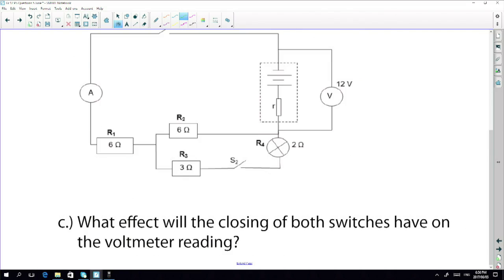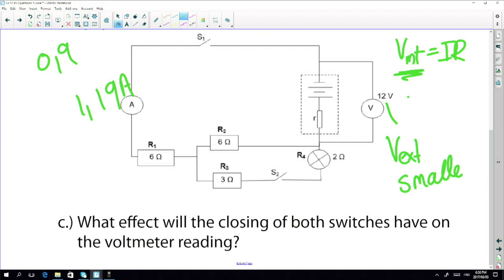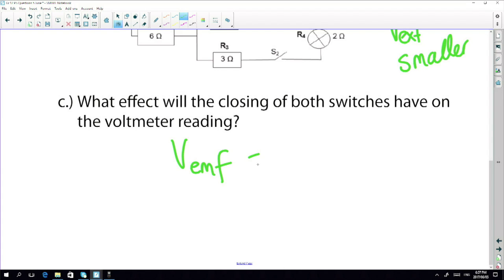Last question. Knight says to you, what effect will the closing of both switches have on the voltmeter reading? This is such an important question because you know that your current in the first was 0.9. Now it's 1.19 amps. Your current increased. Your internal resistance, your internal voltage will increase as well. So the last volts will get bigger. So V external gets smaller. V internal increases because current increased. So V external will decrease because of the increase in V external because your EMF is your external plus your internal and your internal increased. So your external must decrease so that this stays the same. Hopefully that makes sense.